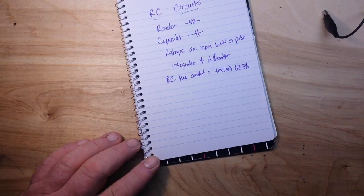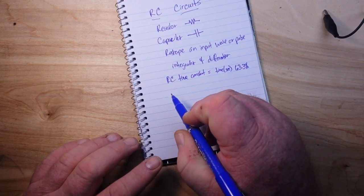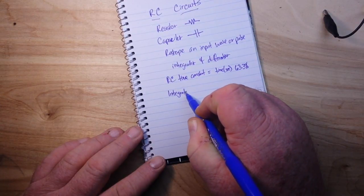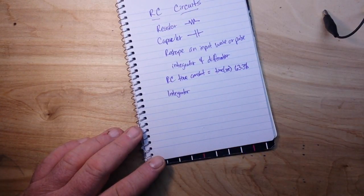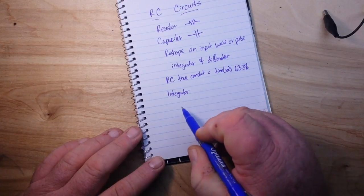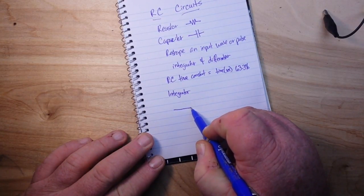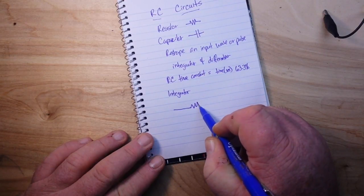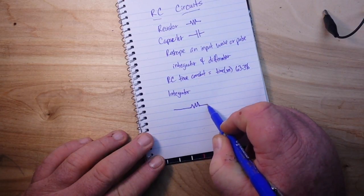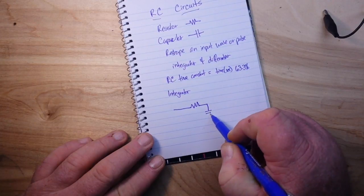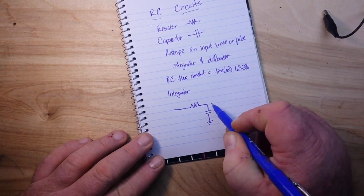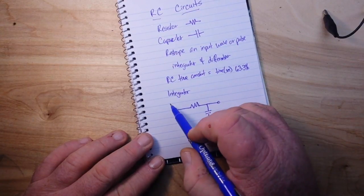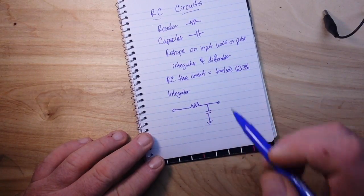As you move on through electronics, it will come into play. So let's talk about the first circuit today, and that is the integrator. What we're going to show you here is incredibly simple. Here's our resistor, here's our capacitor going to ground, there's our output, and there's our input.